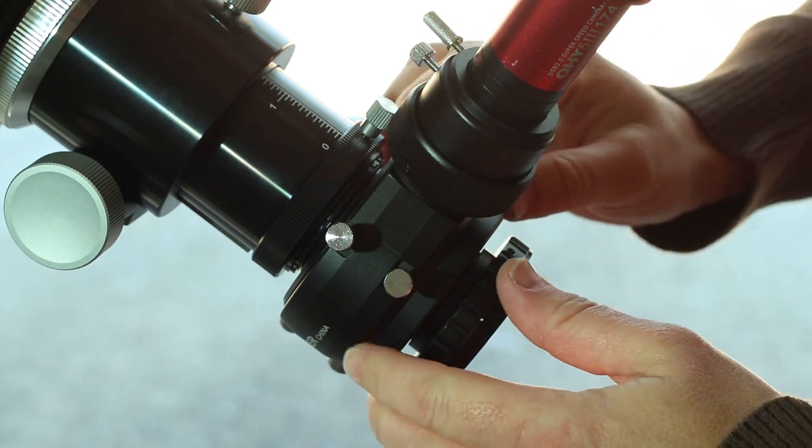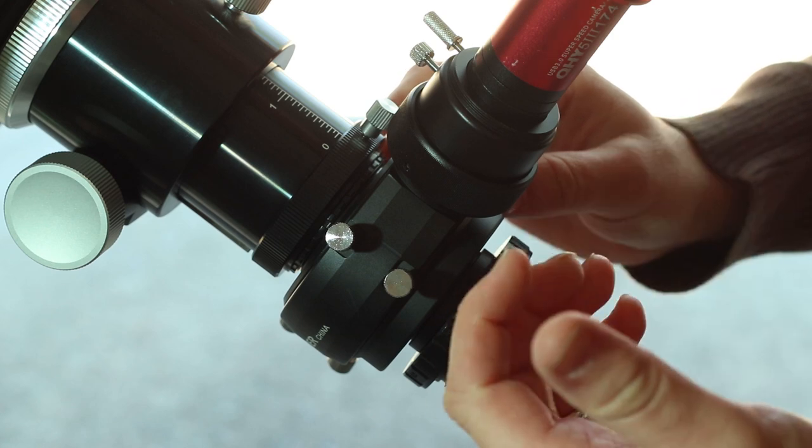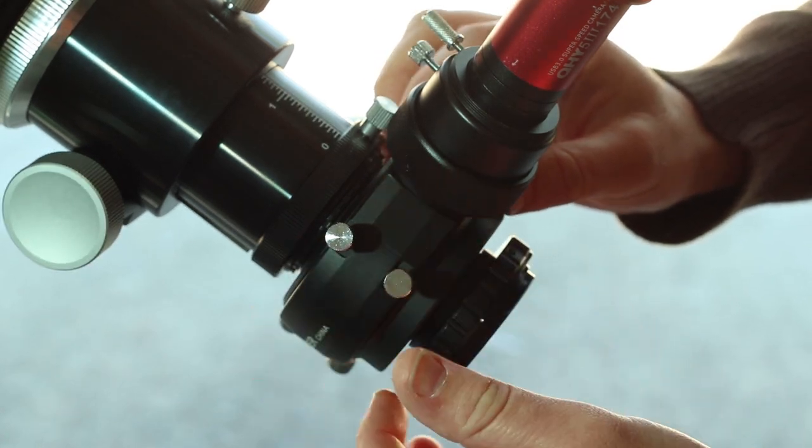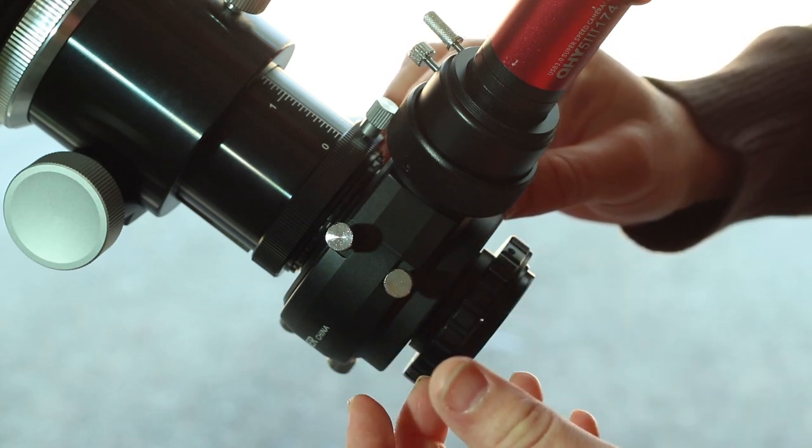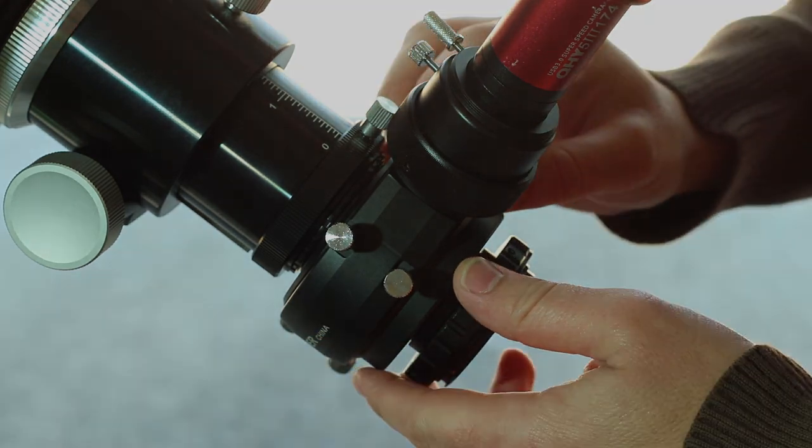Another quick note with this setup: because I'm using an APS-sized sensor, APS crop sensor in my digital SLR, I use the M42 camera adapters. If you have a full frame digital SLR, you would use the M48. So that's just something to keep in mind when you're following this tutorial.